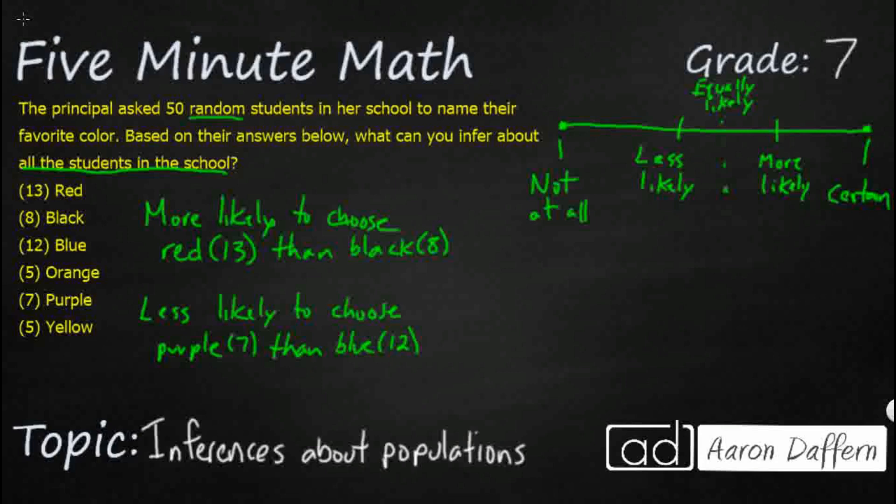We could also say that they are equally likely, and I'm sure you notice this when you're looking at the data. Equally likely to choose, and we've got two that are actually equal here: purple and orange, both five.